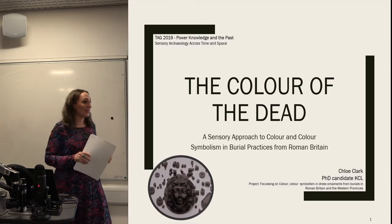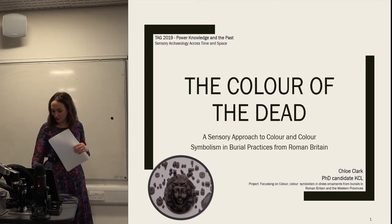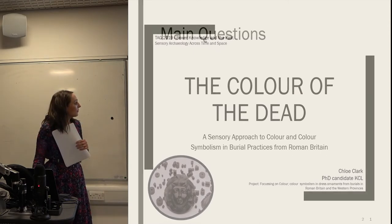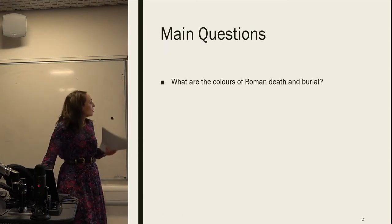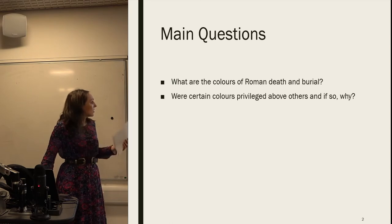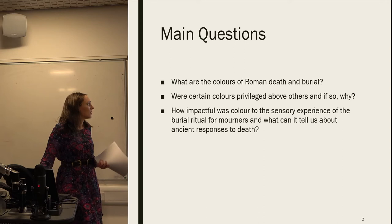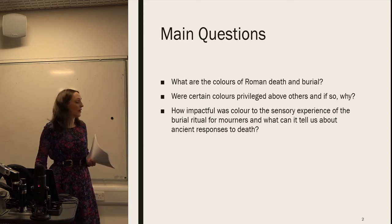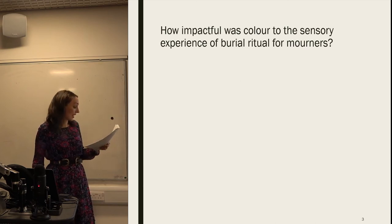I'm not at the write-up phase yet, so if anyone's got any suggestions or questions or anything, I'm really happy to hear them. The main questions of that bigger project are: what are the colours of Roman death and burial? Were certain colours privileged above others, and if so, why? And how impactful was colour to the sensory experience of the burial ritual for mourners? And what can it tell us about ancient responses to death? And it's really that last question that I'm going to look at today.